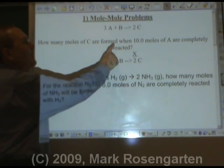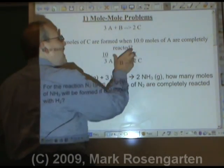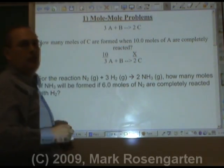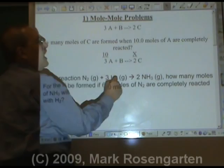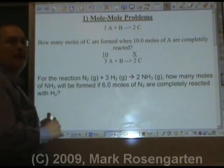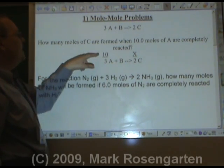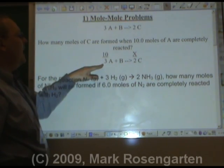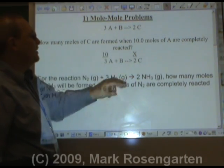For example, how many moles of C are formed when ten moles of A are completely reacted? Now what that's saying is that we have enough B to get the job done. We want to know how much C we're going to get if we react ten moles of A. So what you do is you use the coefficients of the balanced equation. Ten is to the three A as X is to the two C.